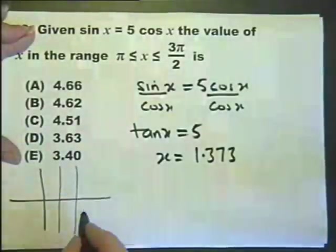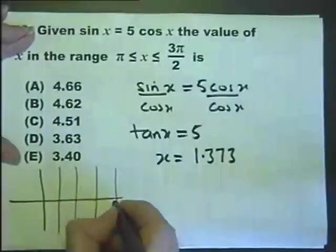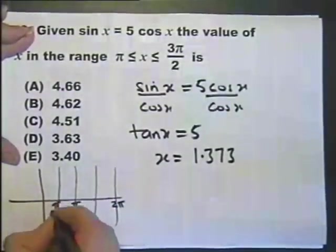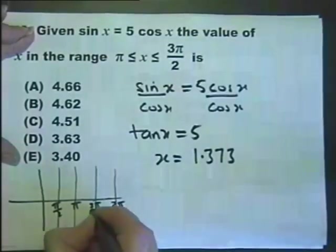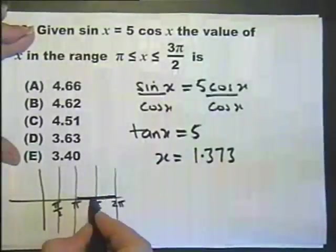These are asymptotes that go through 90, 180, 270, 360 or in radians go through there, there, pi over 2 and 3 pi over 2. So in other words we're actually talking about from there to there our answer is.